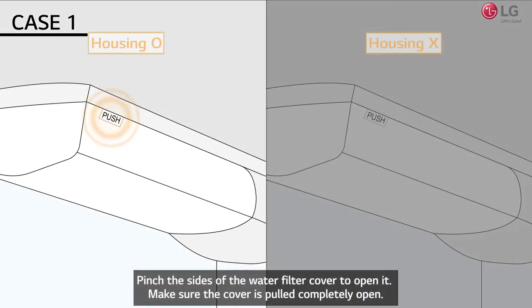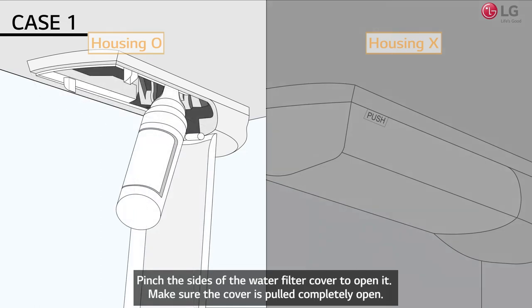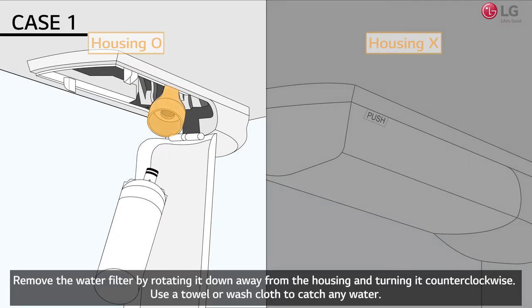Pinch the sides of the water filter cover to open it. Make sure the cover is pulled completely open. Remove the water filter by rotating it down away from the housing and turning it counterclockwise. Use a towel or washcloth to catch any water.